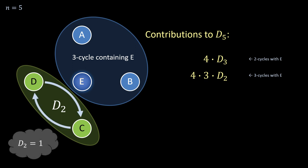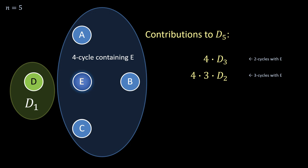The same pattern can now be extended to four cycles with e. There are four permute three of them, or four times three times two. Now D_1 appears in the expression. But this is zero. So this whole term could be dropped.